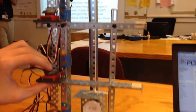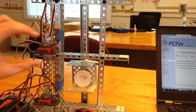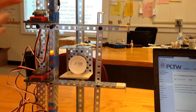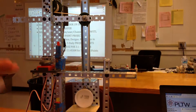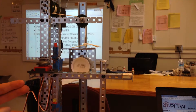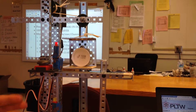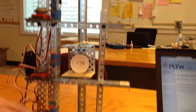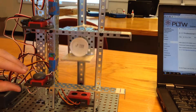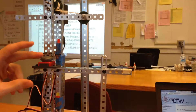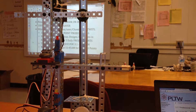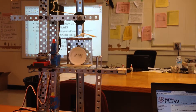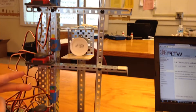So when I press the second button, it goes up to the second floor. Press the third button, go to the third floor, go back down to the second, back down to the first, and go all the way up to the third, all the way back down to the first.